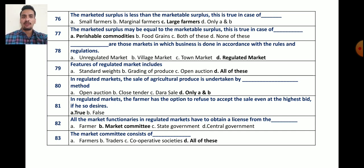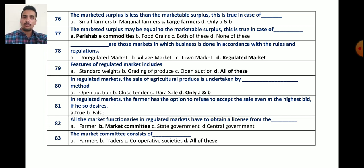Question number 77: the marketed surplus may be equal to marketable surplus. This is true in case of which commodities? It may be in case of perishable commodities, food grains, both of these, or none of these. The correct answer is perishable commodities like fruits, vegetables, and some flowers, because their keeping duration or keeping quality is very less.